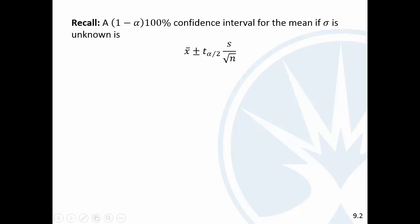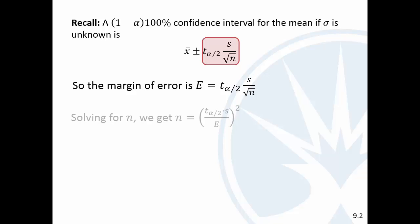All right, last thing we want to talk about is this sample size necessary. So, we got this confidence interval, and if we look at the last part there, that's the margin of error. And so, if we solve that for N, you can do a little algebra here, multiply by the square root of N on both sides, and then divide by E, and then square it. We get this T alpha over 2 times S all over E, and the whole thing is squared. Very similar to what we had for the sample size necessary for the population proportion.